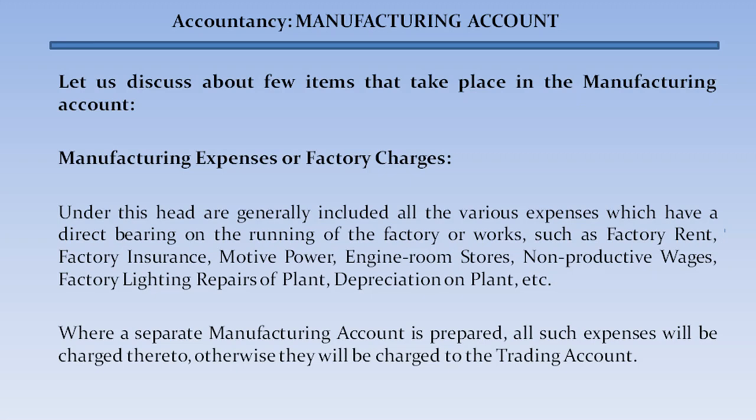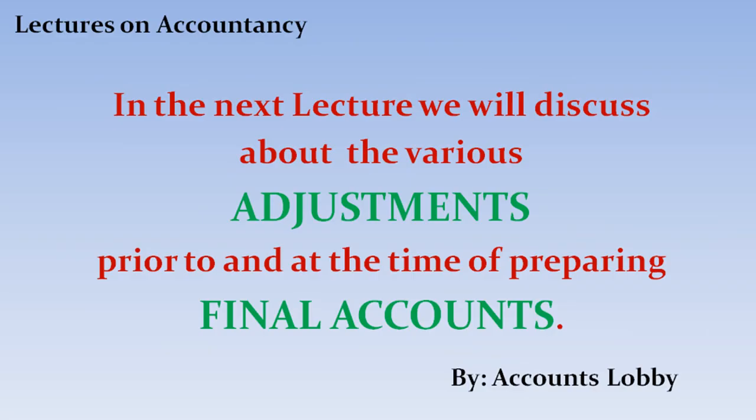Manufacturing expenses or factory charges: under this head are generally included all the various expenses which have a direct bearing on the running of the factory or works, such as factory rent, factory insurance, motive power, engine room stores, non-productive wages, factory lighting, repairs of plant, and depreciation of plant. Where a separate manufacturing account is prepared, all such expenses will be charged there; otherwise they will be charged to the trading account. In the next lecture we will discuss the various adjustments prior to and at the time of preparing final accounts.